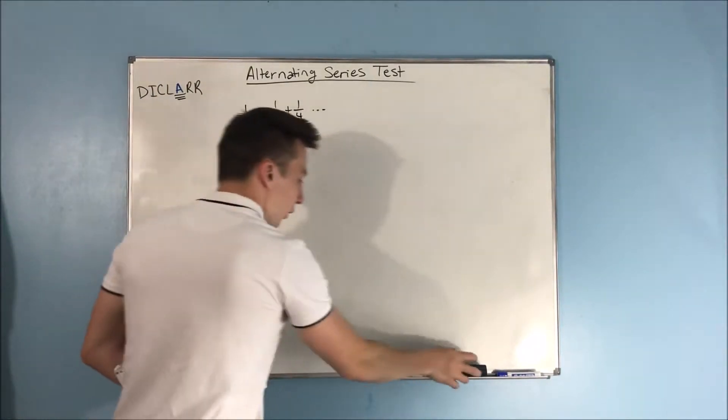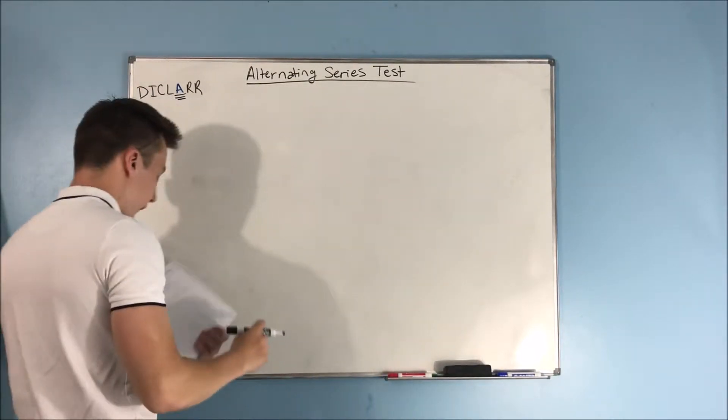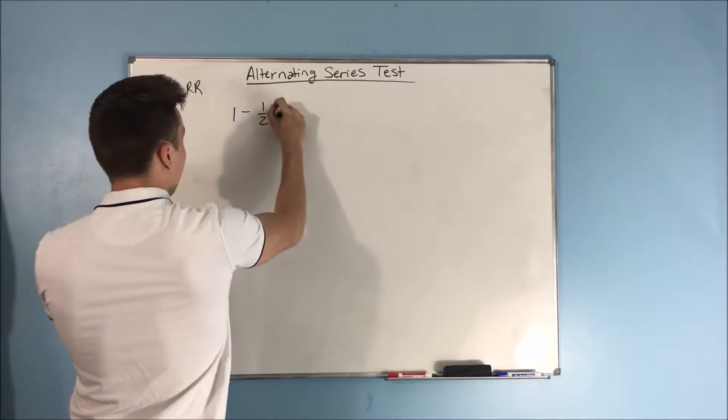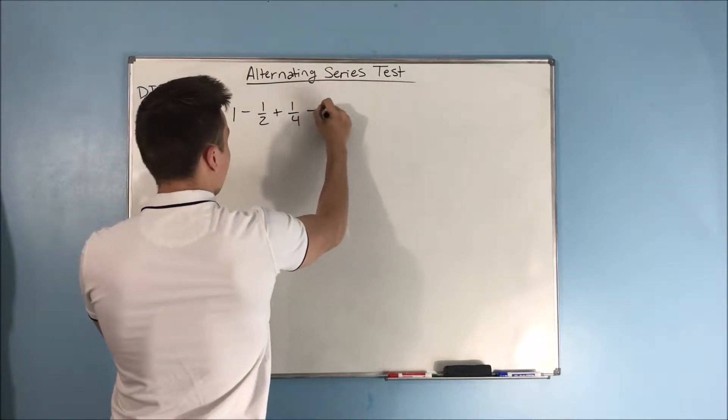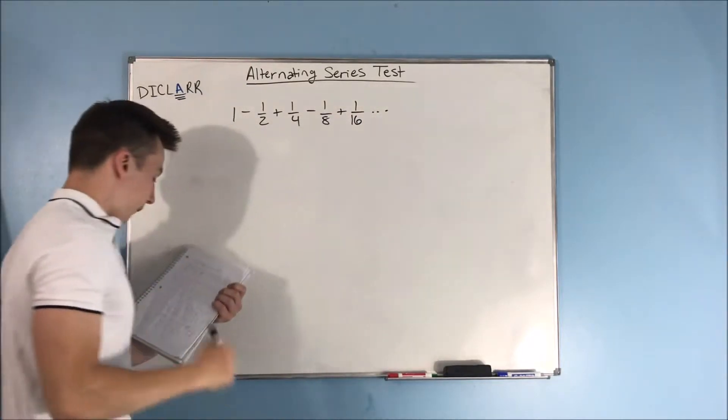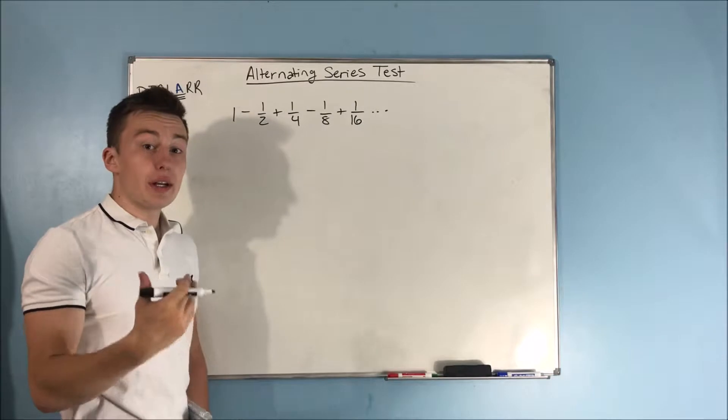But what if we throw in some negative terms? What if we had a series that was like 1 minus 1 half plus 1 fourth minus 1 eighth plus 1 sixteenth on and on and on.